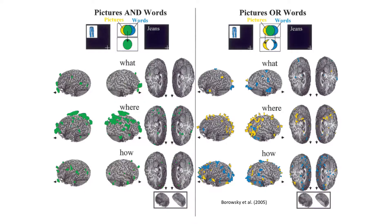When we ask fMRI participants to either say what a target picture or word is, where it is located on the screen, or how they would interact with it, we see this distinction quite clearly. On the right panel, unique picture activation is in yellow, word activation is in blue, and on the left panel the shared activation is shown in green.